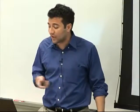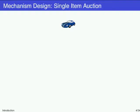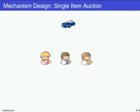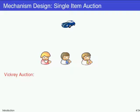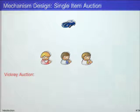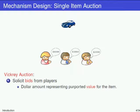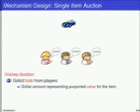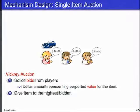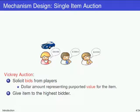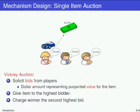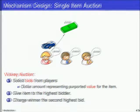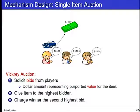Let me start by introducing mechanism design via a canonical example. Let's say you have an item to sell — say, your car — and there's a bunch of people interested in buying it. A commonly employed solution is called the Vickrey auction: a three-step process. First, I ask players for bids — a dollar amount representing how much they value the car. Then I give the item to the highest bidder, and charge that person the second-highest bid price.